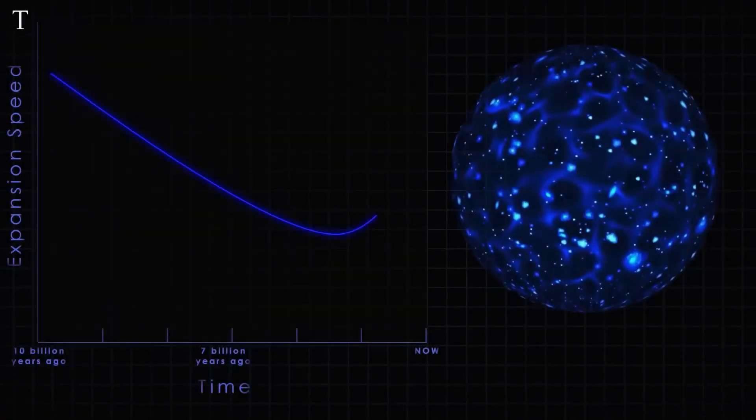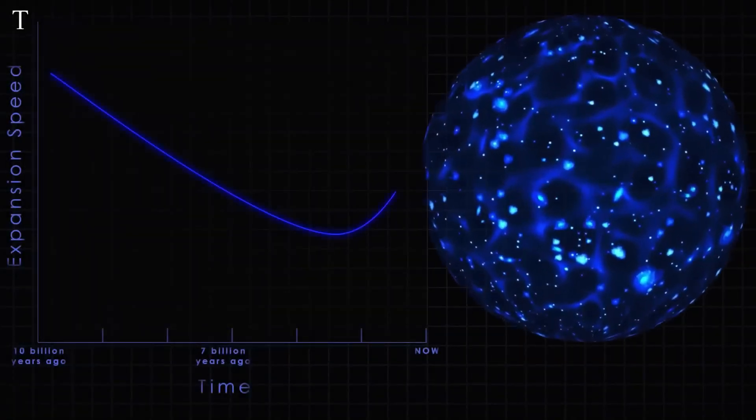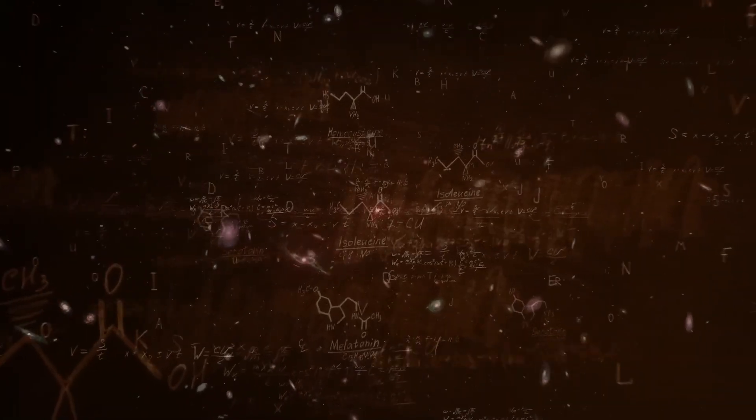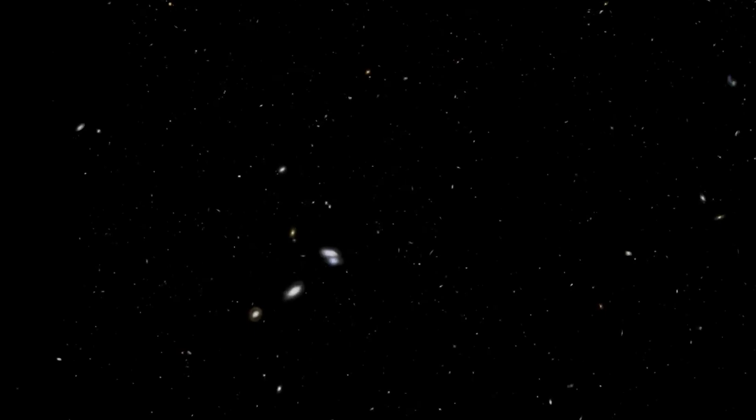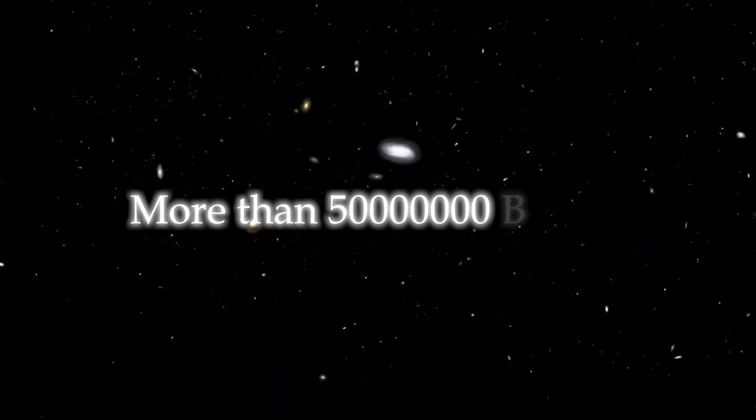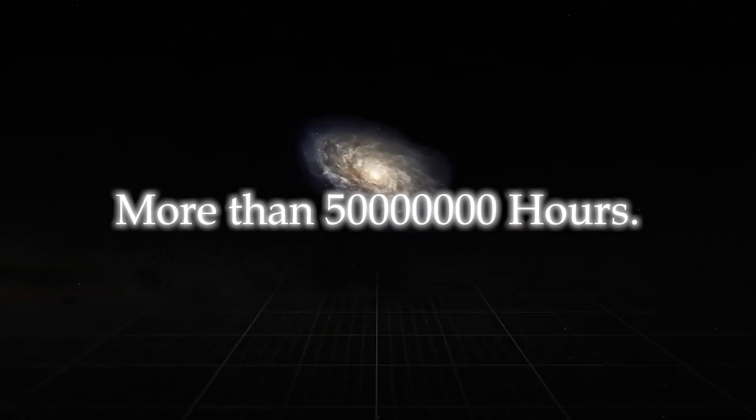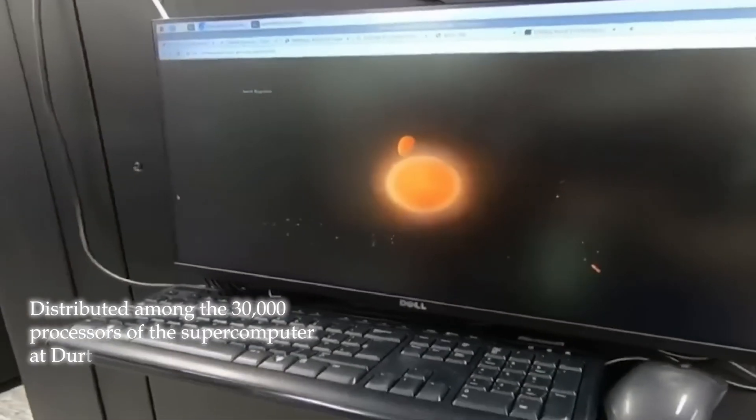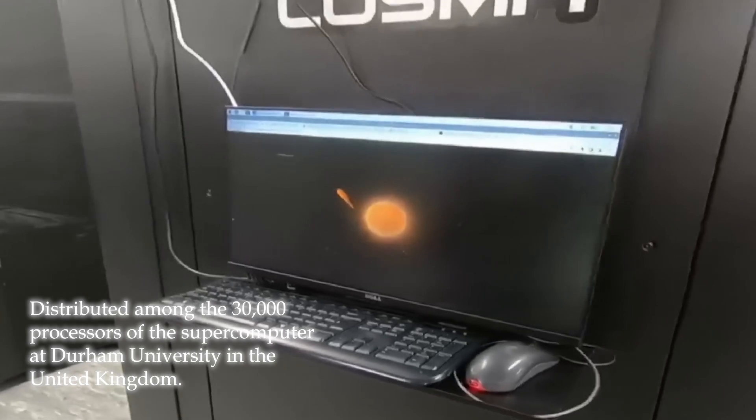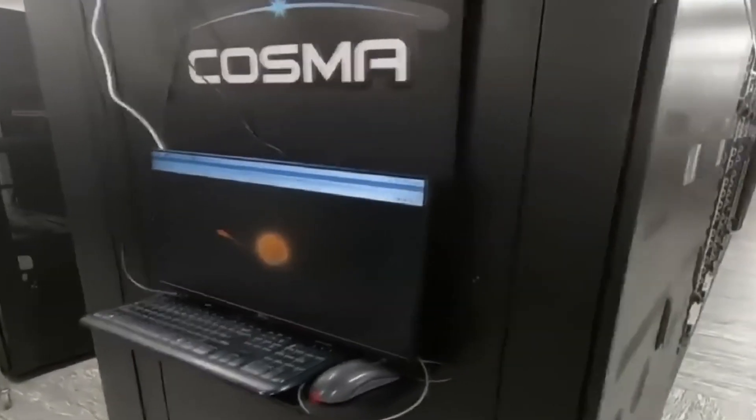To unravel this enigma, one of the world's most powerful supercomputers has been used to perform cosmological simulations. The magnitude of this project is evident when considering that simulations require more than 50 million hours of computation, distributed among the 30,000 processors of the supercomputer at Durham University in the United Kingdom, nicknamed FLAMINGO.